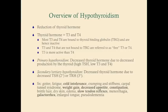Primary hypothyroidism is hypothyroidism that's caused by the thyroid itself, so decreased thyroid hormone due to decreased production. Because you have low T3 and T4, you're going to have a high TSH because you have decreased inhibitory feedback on the hypothalamus and anterior pituitary. T3 and T4 would normally cause TSH production to go down, so a low T3 and T4 and a high TSH is characteristic of primary hypothyroidism.